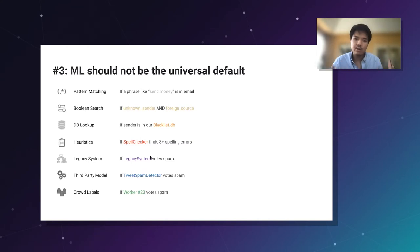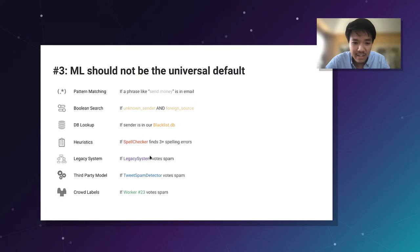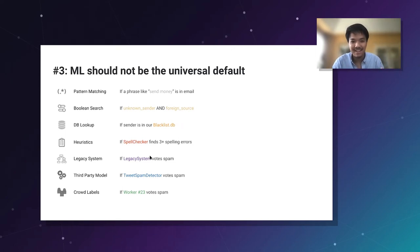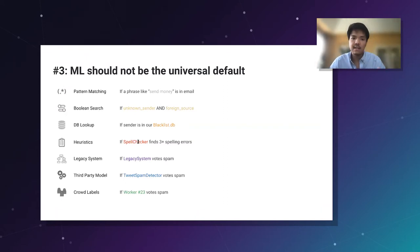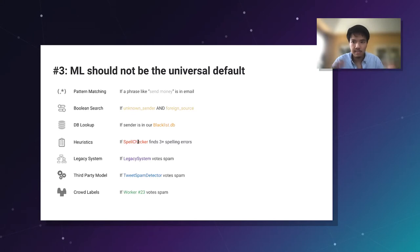Third: machine learning shouldn't be the universal default for solving these problems. Once we break a problem down into its requisite components, it's equally important to avoid assuming every component is some big fancy deep learning model. The key is to start with sensible defaults — often heuristics — and use that organizational knowledge to bootstrap your pipeline. Then, based on empirical error analysis, if a specific heuristic is underperforming, replace it with a learned ML component.